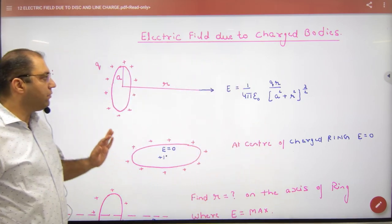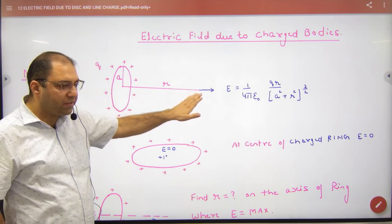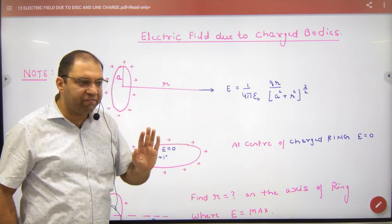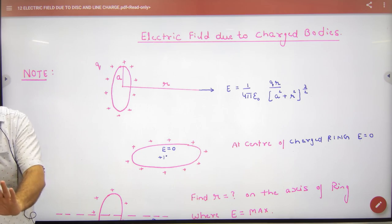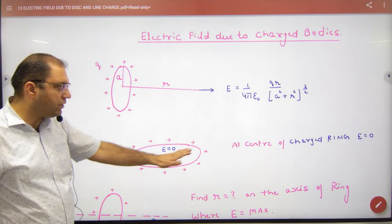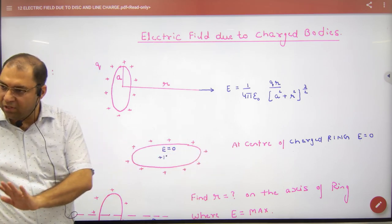So what was the electric field axis of ring at r distance? We entered it in the formula register. What was the value of E in the center? What was the value of ring? Zero. We have done this.